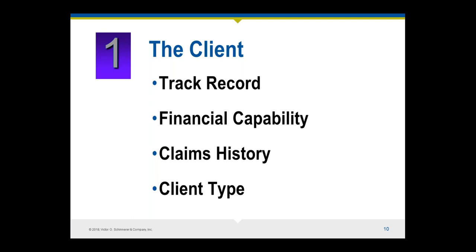You also want to think about what type of client you're dealing with, because each type might result in a different risk management response. First, is it a sophisticated client or a naive client? A sophisticated client — like a big-time developer who's done lots of projects — may be trying to transfer all of their risk and responsibility onto the design team and contractors, so you need to review those contracts carefully. On the other hand, a naive client, like a husband and wife who have never hired a design professional before building their ideal home, will need a lot more hand-holding and explanation of what's to be expected, what you can do and what you can't do.